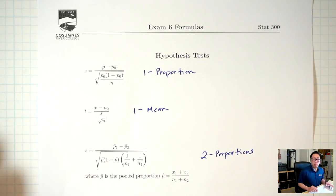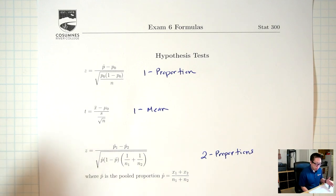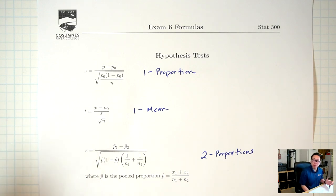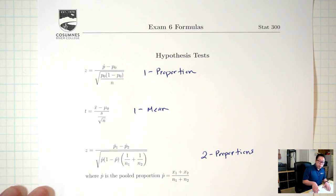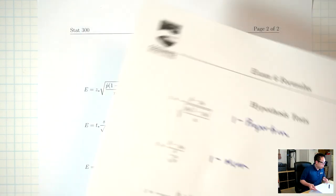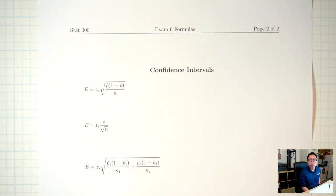This is the same formula sheet that we used in the last lecture. The front page we talked about in the last lecture — those are the formulas for hypothesis tests. Today I want to talk about the second page, which are the formulas for confidence intervals.